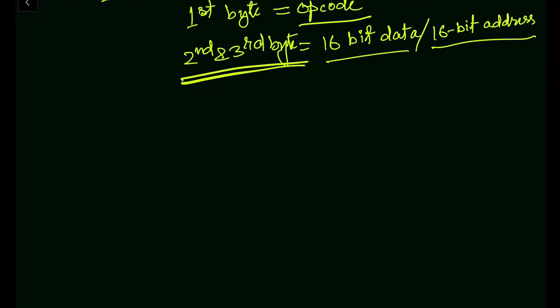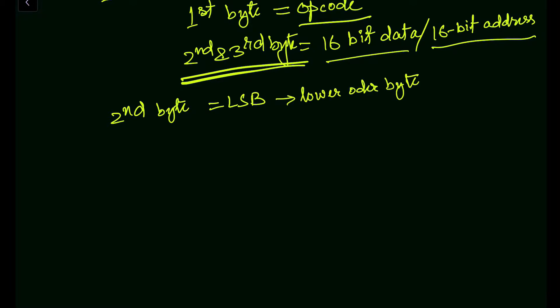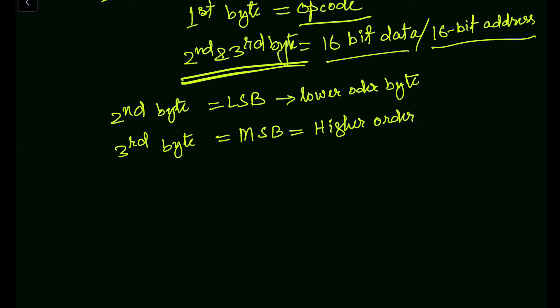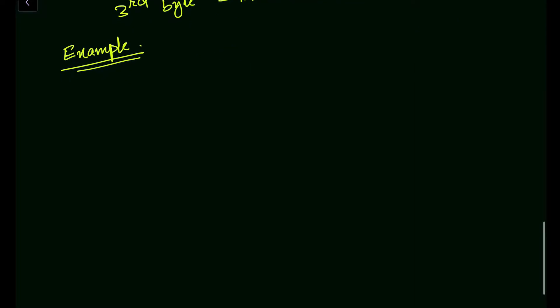Within the three-byte instruction, the second byte will be the LSB — the lower-order byte — and the third byte will be the MSB — the higher-order byte. So the second byte represents the lower-order 8 bits and the third byte represents the higher-order 8 bits of the 16-bit data or address.